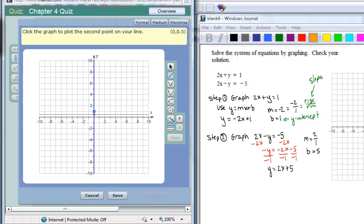And then I'm going to go down 2 over 1. Do another click. That is my first line.